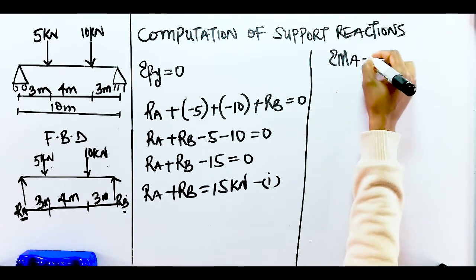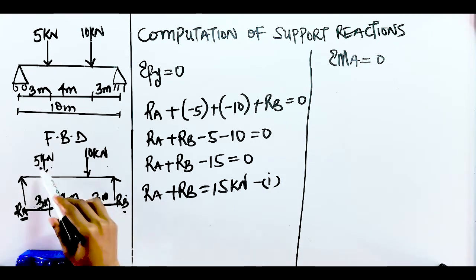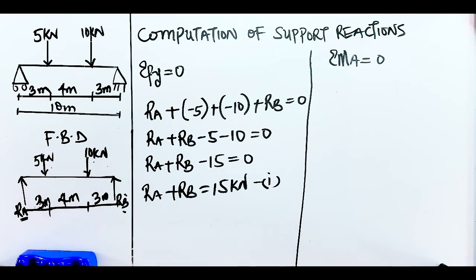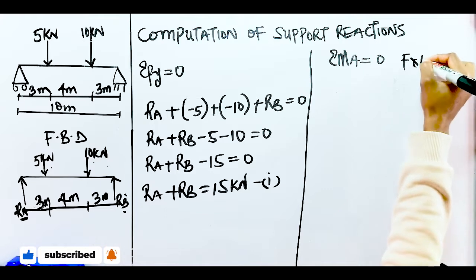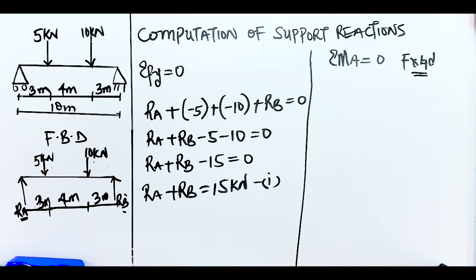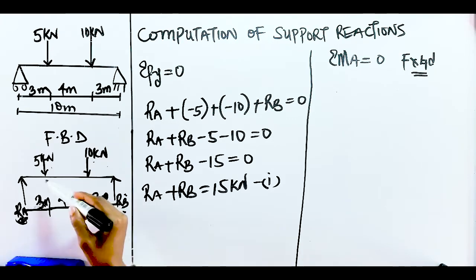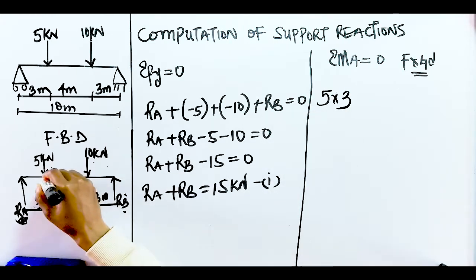Taking moments about point RA: all forces acting at this point equal zero, so we are left with three forces — 5 kN, 10 kN, and RB. Remember, a moment is the product of force times perpendicular distance from the point of turning to the line of action. Since we are taking moments about RA, we calculate each force's contribution accordingly.